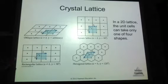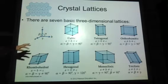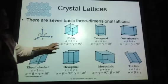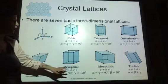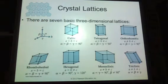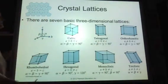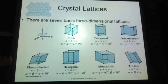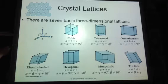That covers two dimensions, but we can also have shapes for three dimensions. There are seven basic three-dimensional lattices: cubic, tetragonal, orthorhombic, rhombohedral, hexagonal, monoclinic, and triclinic. For the most part, you just need to know the names of the seven basic types — they're not going to ask very specifically about the lengths or the angles.